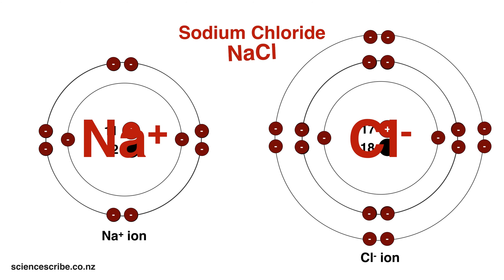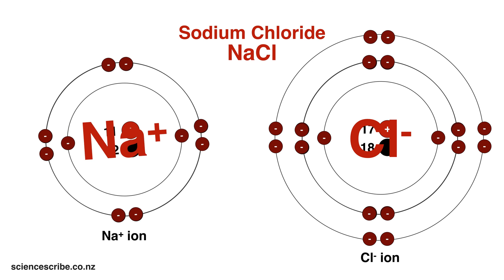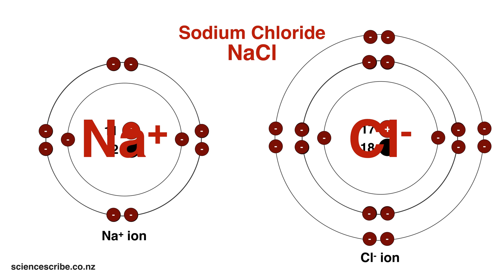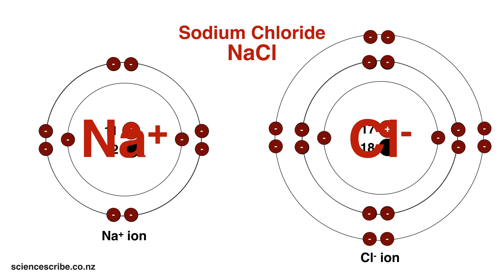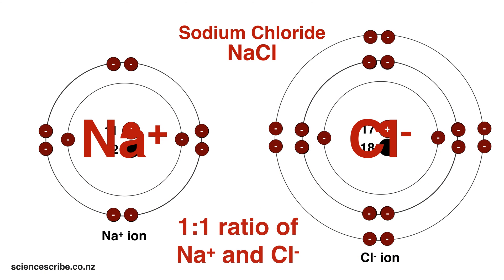But what does NaCl, the ionic formula, actually tell us? Well, it tells me that for every one Na+ I should have one Cl- ion. In other words, my sodium ions and chloride ions are in a 1 to 1 ratio.